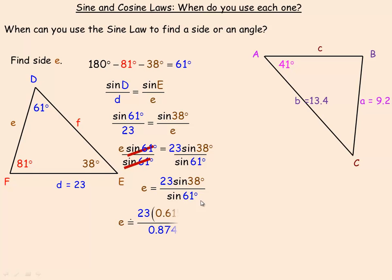Here's the calculation to find e: it's 23 sine 38 over sine 61. The sine of 38 is about 0.6157, and the sine of 61 is about 0.8746. Multiplying and dividing these decimals, side e works out to be about 16.2.